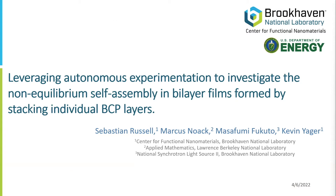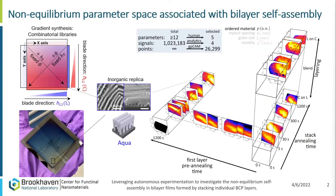Thank you, Marcus. Thank you for that introduction. It's my pleasure to give an example of how we've used this in an experimental setting. The project I've been working on at Brookhaven is leveraging autonomous experimentation to investigate non-equilibrium phenomena associated with the self-assembly of bilayer films formed by stacking individual copolymer layers. The sample geometry is a combinatorial library that varies in both thickness and composition, generated by using gradient synthesis to blade-coat thickness gradients of one copolymer — say a lamella-forming copolymer — and then in the orthogonal direction, blade-coating another thickness gradient of a cylinder-forming copolymer.